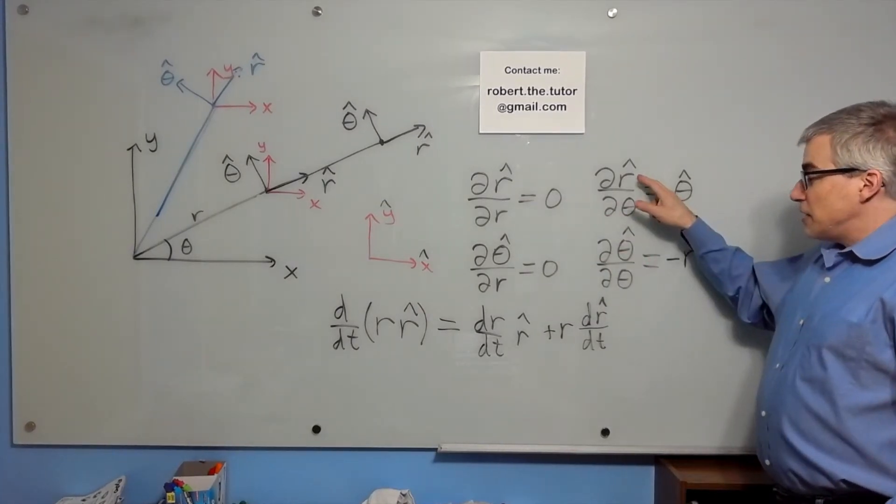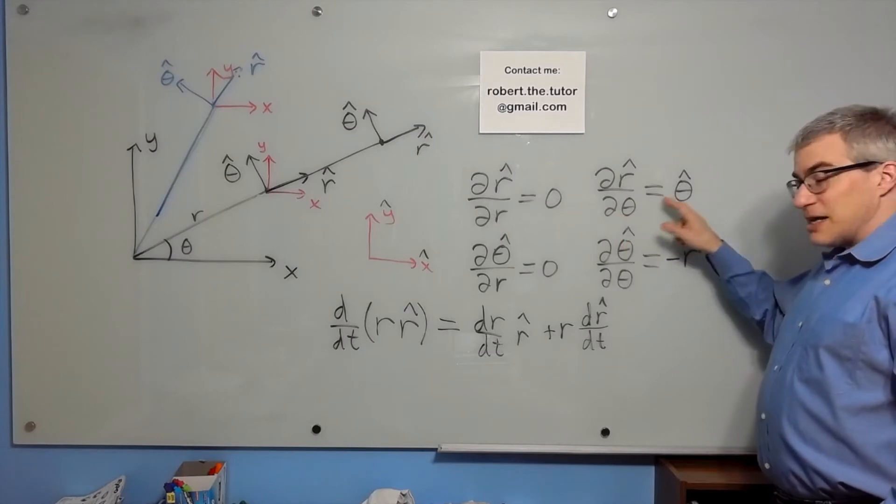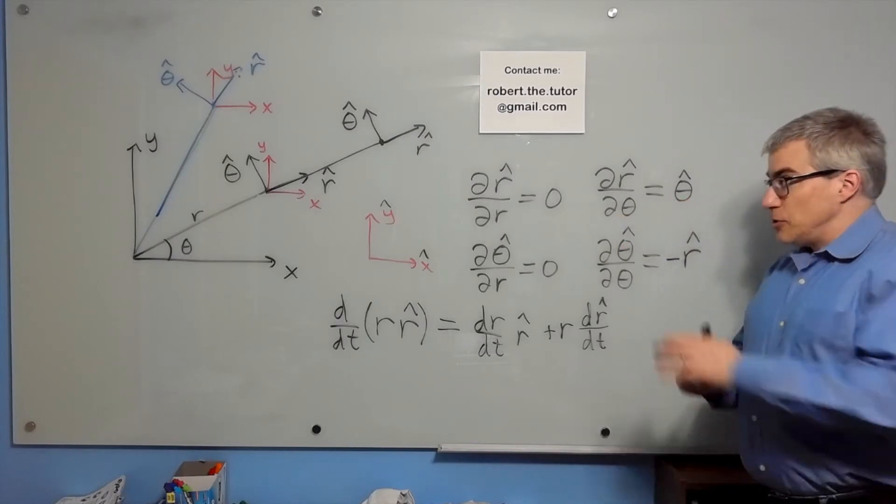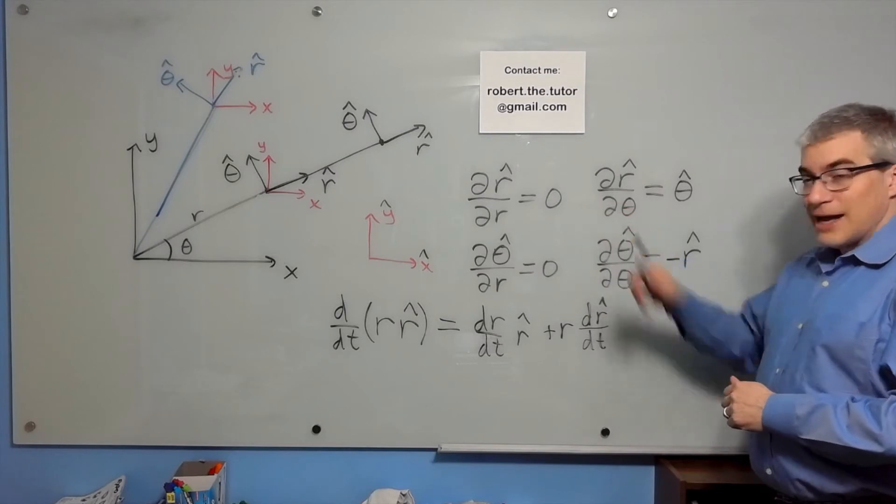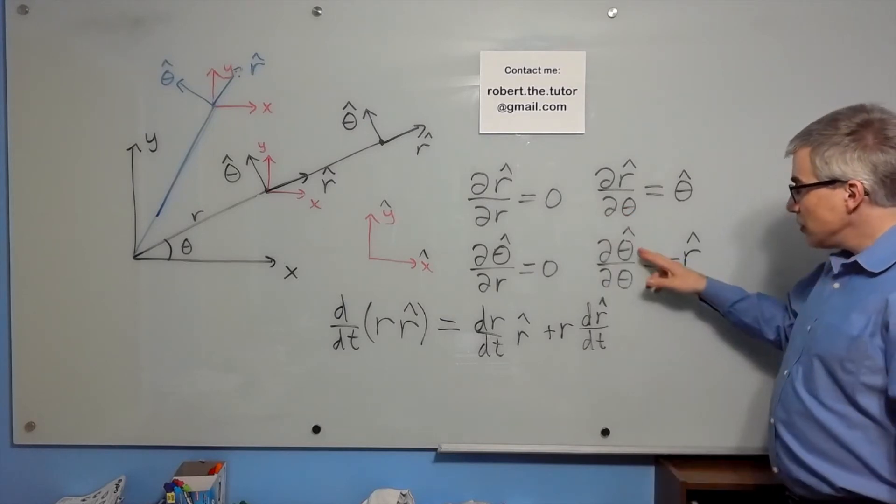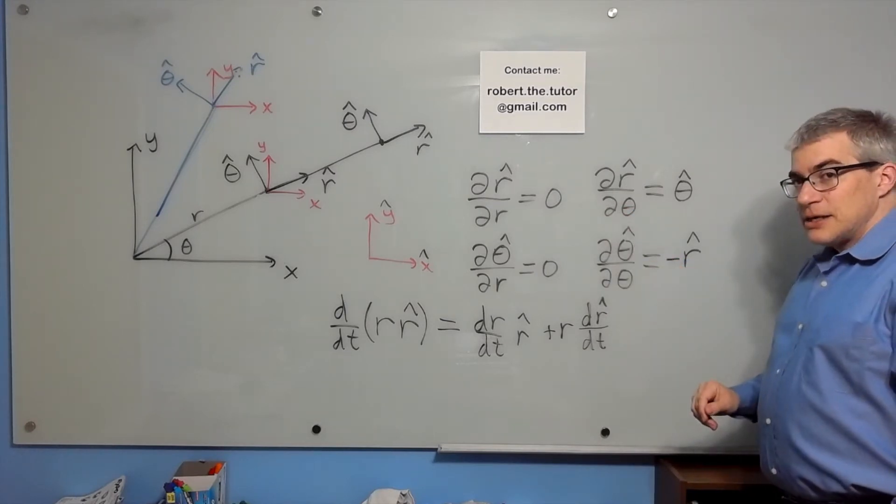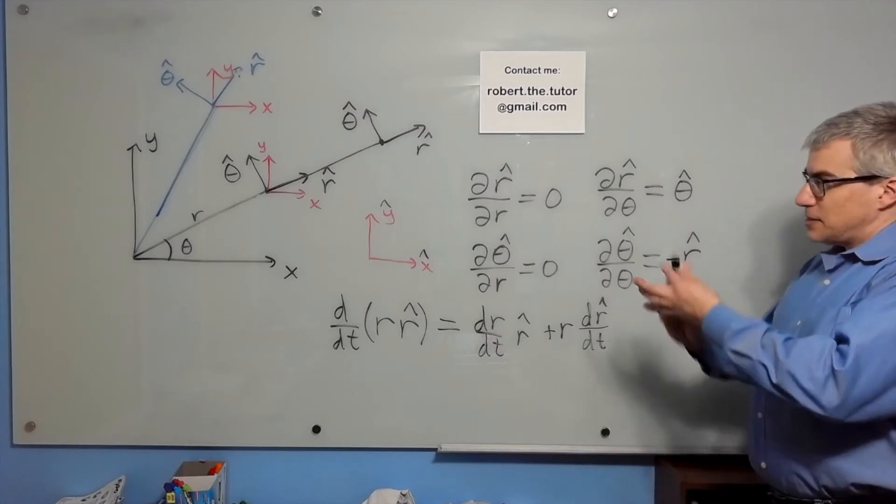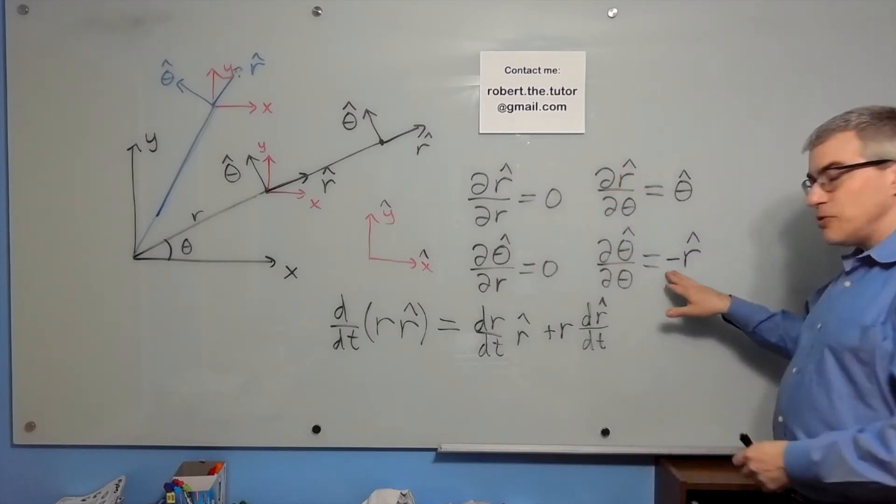It turns out that the partial of r-hat with respect to theta is theta-hat. You're turning in the theta direction. That's how r-hat is changing. And as for theta-hat, if you change theta, it's essentially turning inward, so you get negative r-hat.